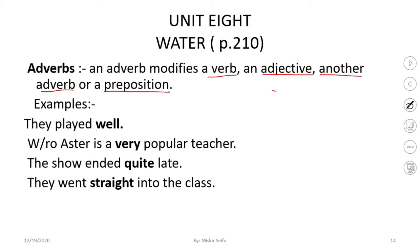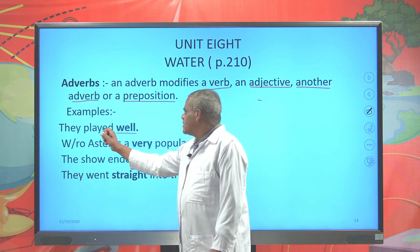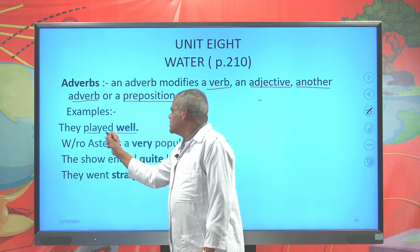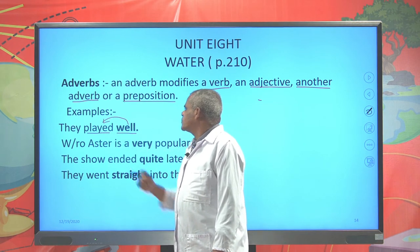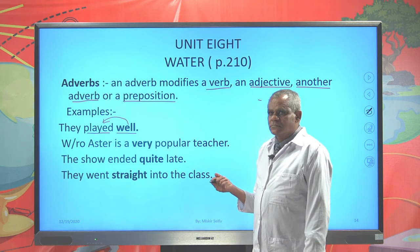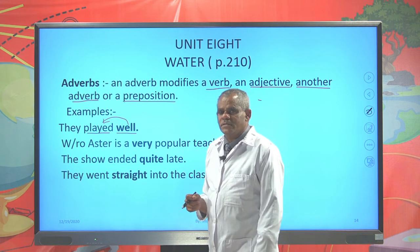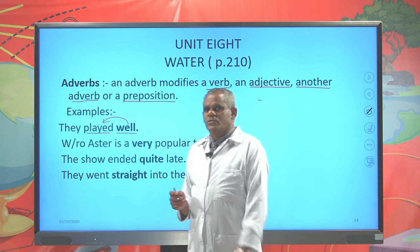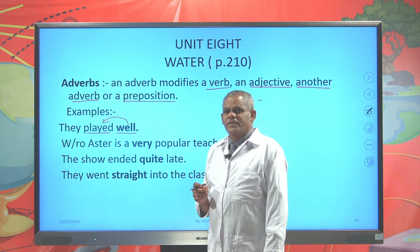'They played well.' Well is an adverb. What does it modify? It modifies the word 'played' — that is a verb. This is what we call an adverb that modifies a verb. How did they play? Well. Most of the time, we can identify this kind of adverb by asking the question 'how.' Go back to your previous lesson and revise how we identify these kinds of adverbs in different sentences.